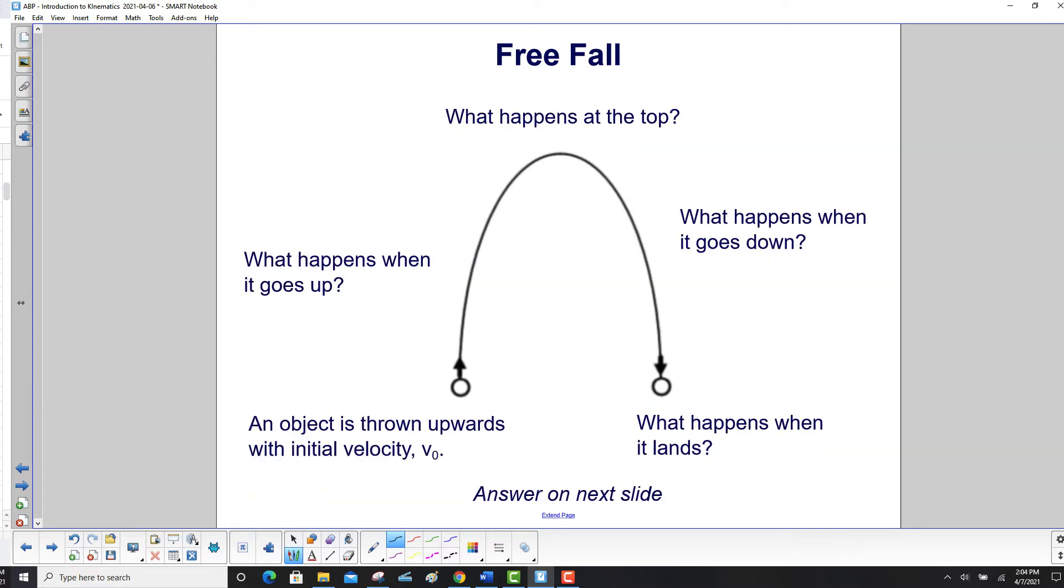An object is thrown upwards with initial velocity v0, right over here. What happens when it goes up? What happens at the top? What happens when it goes down? And then finally, what happens when it lands? The answer will be on the next slide.